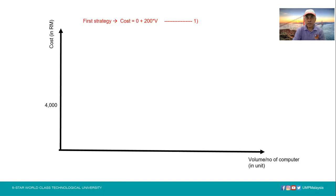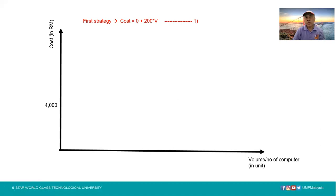The first strategy is where the sales associate builds a computer when an order is received by the shop. In this case, the total cost equation has no fixed cost — zero — and a variable cost of 200 ringgit times volume. So the total cost is 200 times volume, meaning the shop pays 200 ringgit per computer.